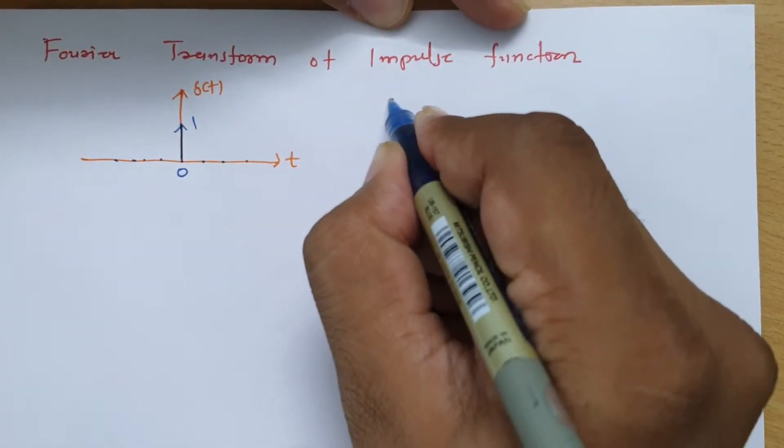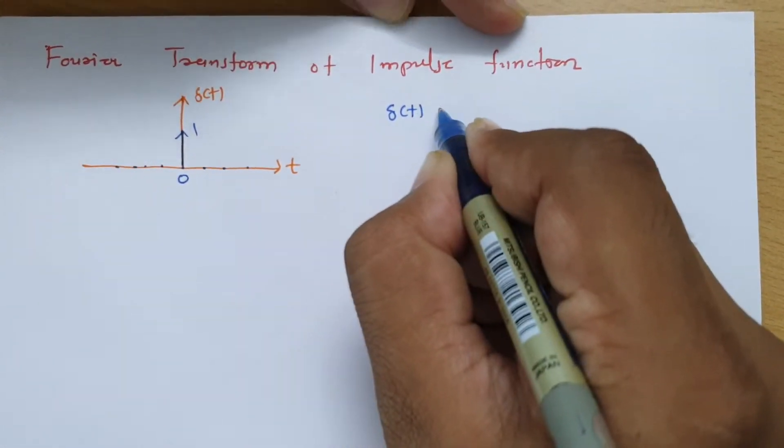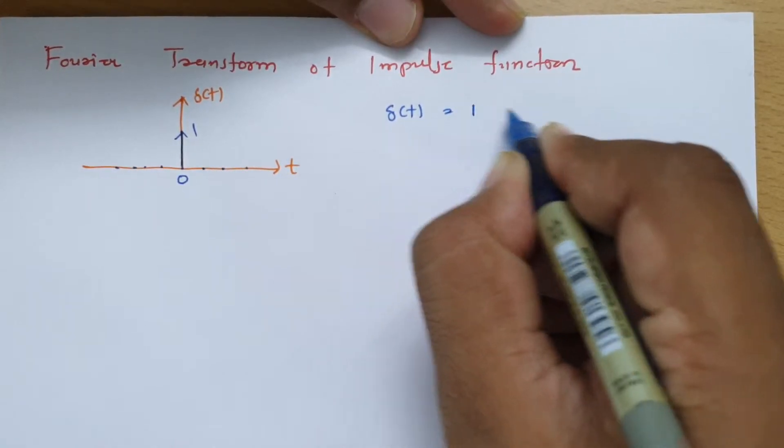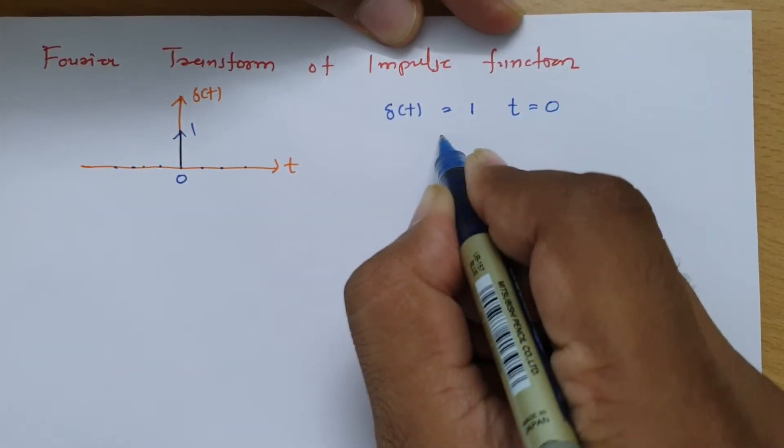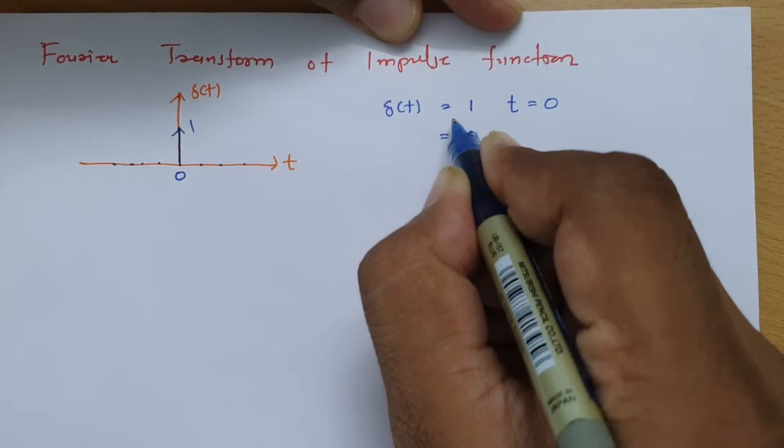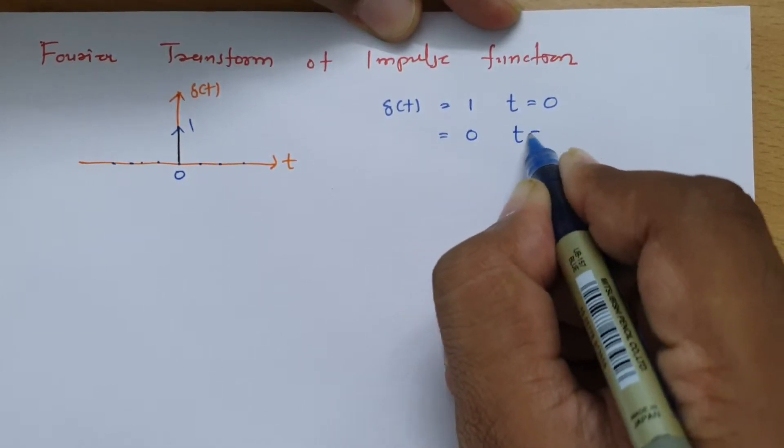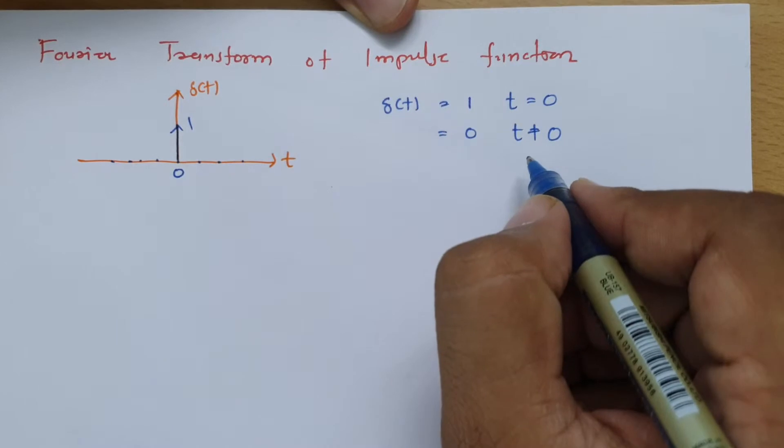In terms of function, if I want to define then that is delta t and that equals 1 at t equals 0 and its value is 0 where t is not equals to 0. So that is what sampling function.